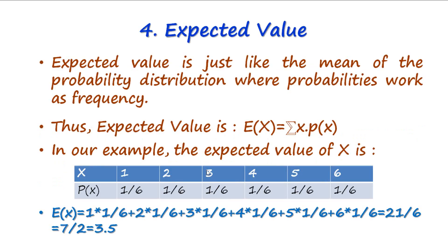Next we move to expected value. The expected value is simply the average value of the random variable, just like the arithmetic average of a frequency distribution. In the case of rolling a die, we have six values of X and their corresponding probabilities. The expected value is defined as the summation of x times the probability of x. So this is 1×(1/6) + 2×(1/6) + 3×(1/6) + ... + 6×(1/6), which equals 3.5.